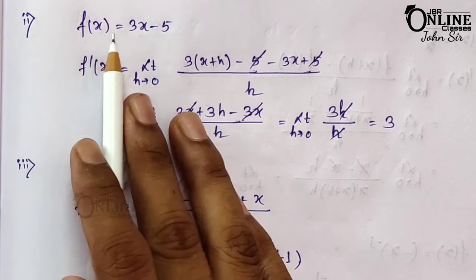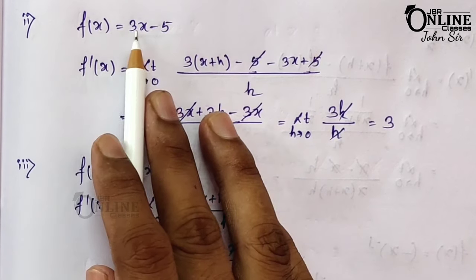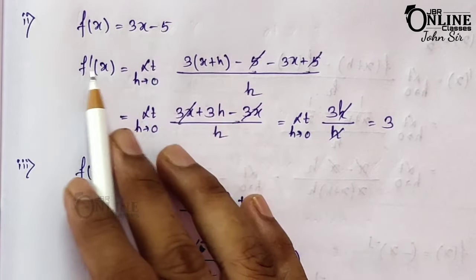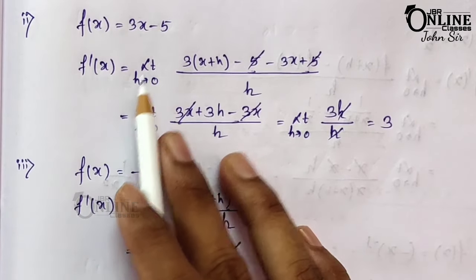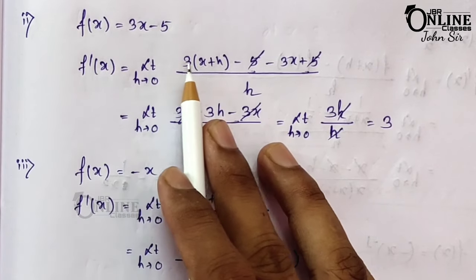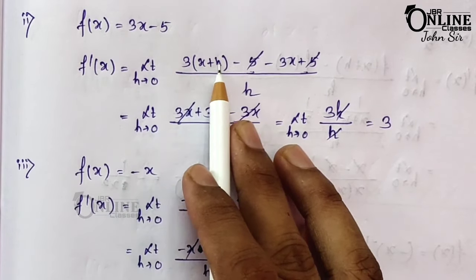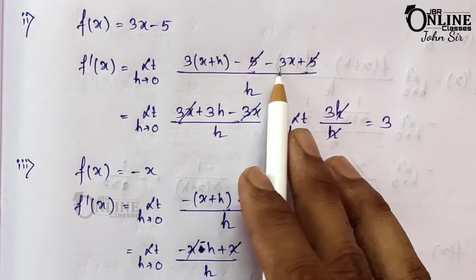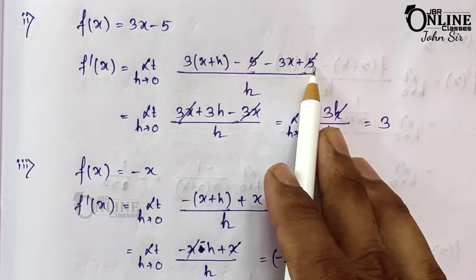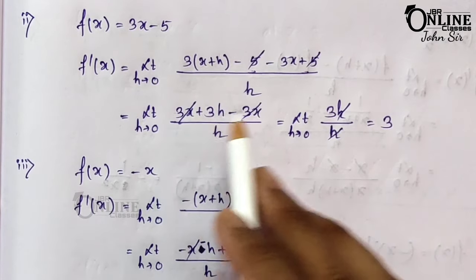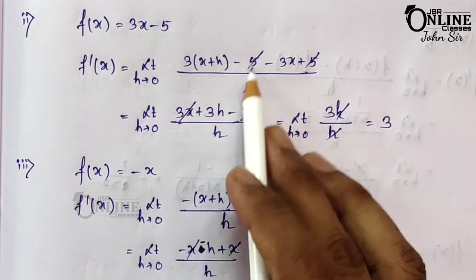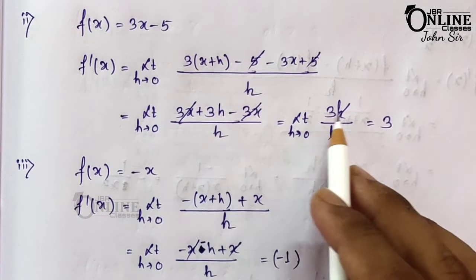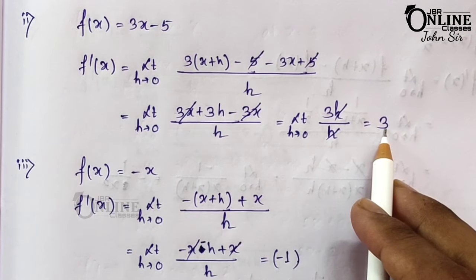Sub-problem 2: f(x) = 3x - 5. So f'(x) = limit h→0 of [3(x+h) - 5 - (3x - 5)] / h = 3h/h = 3.